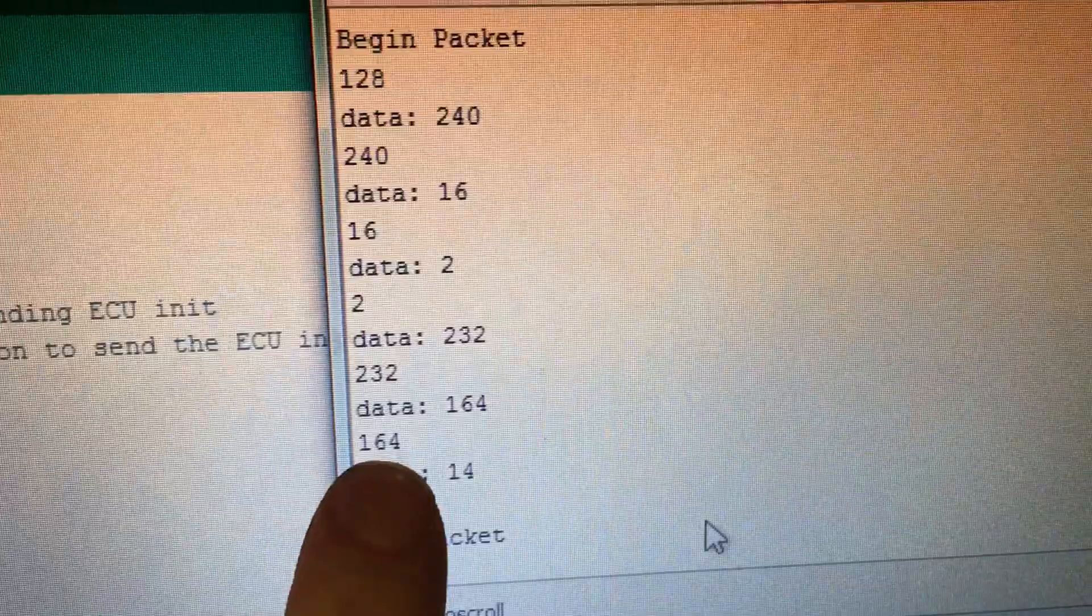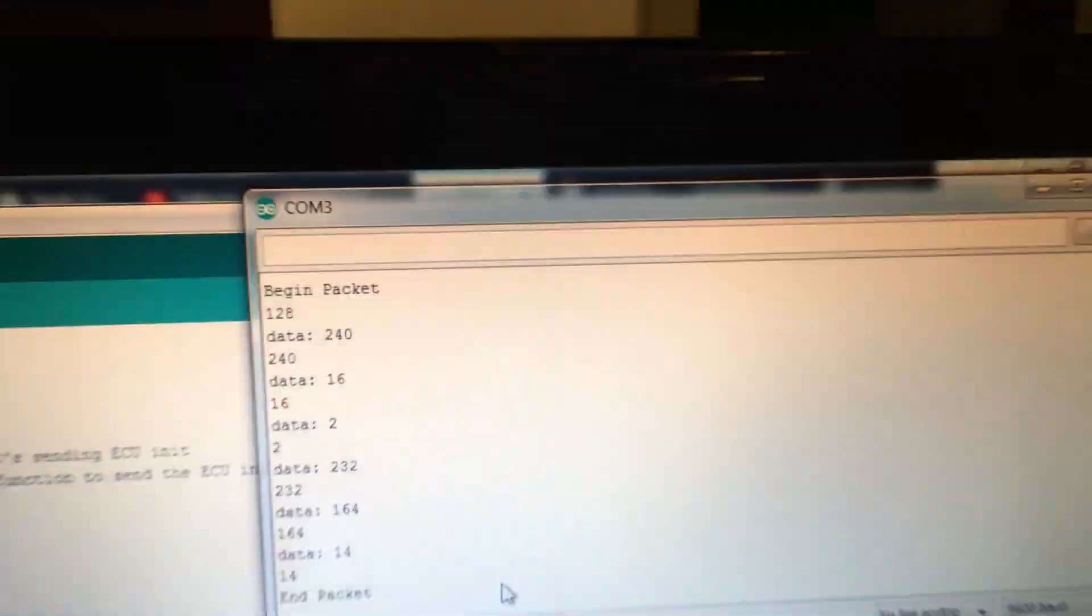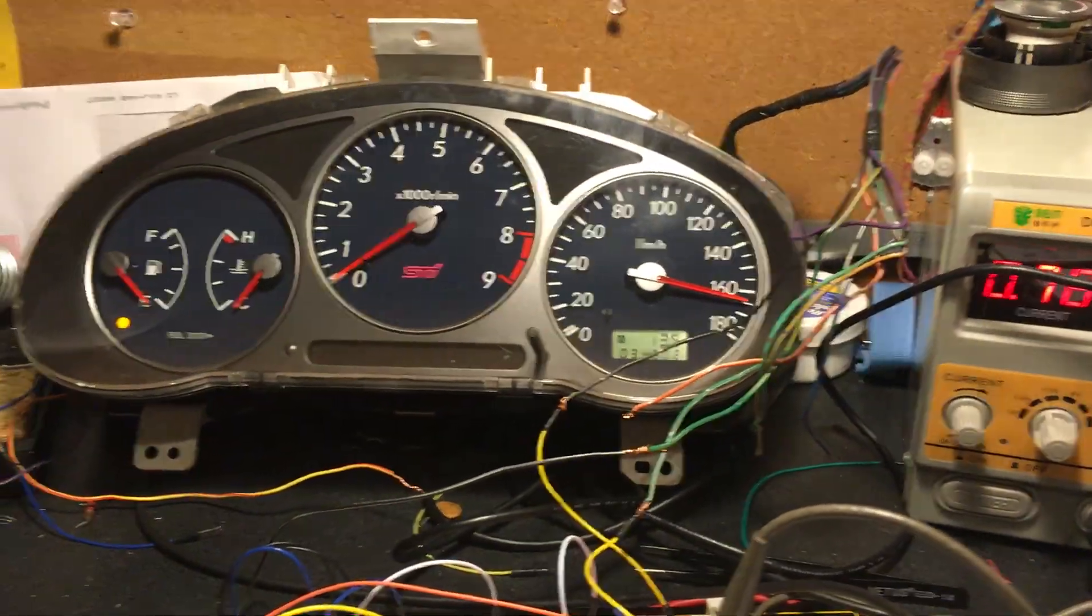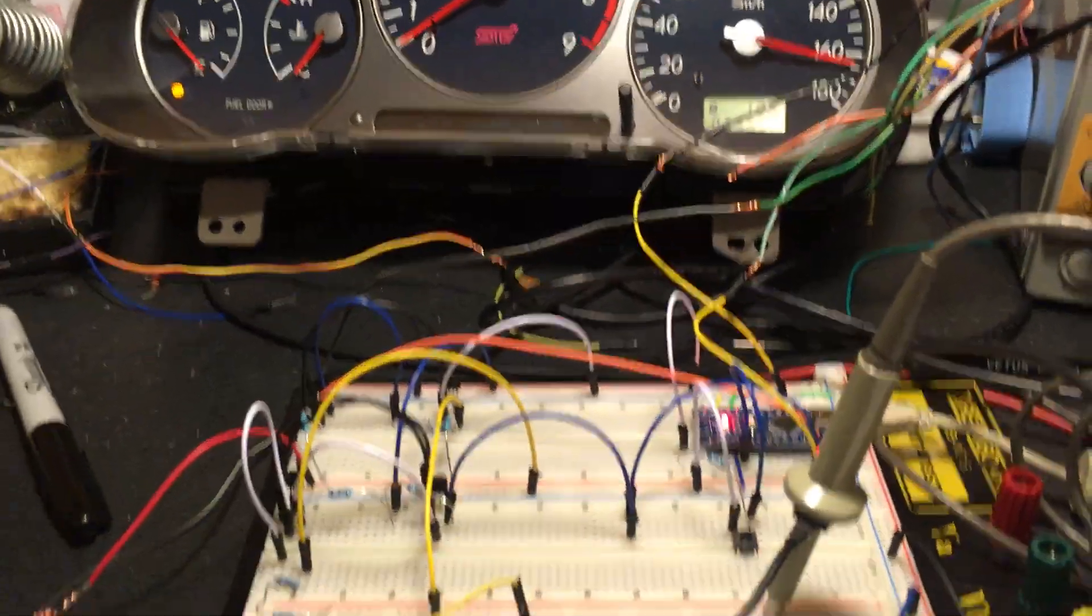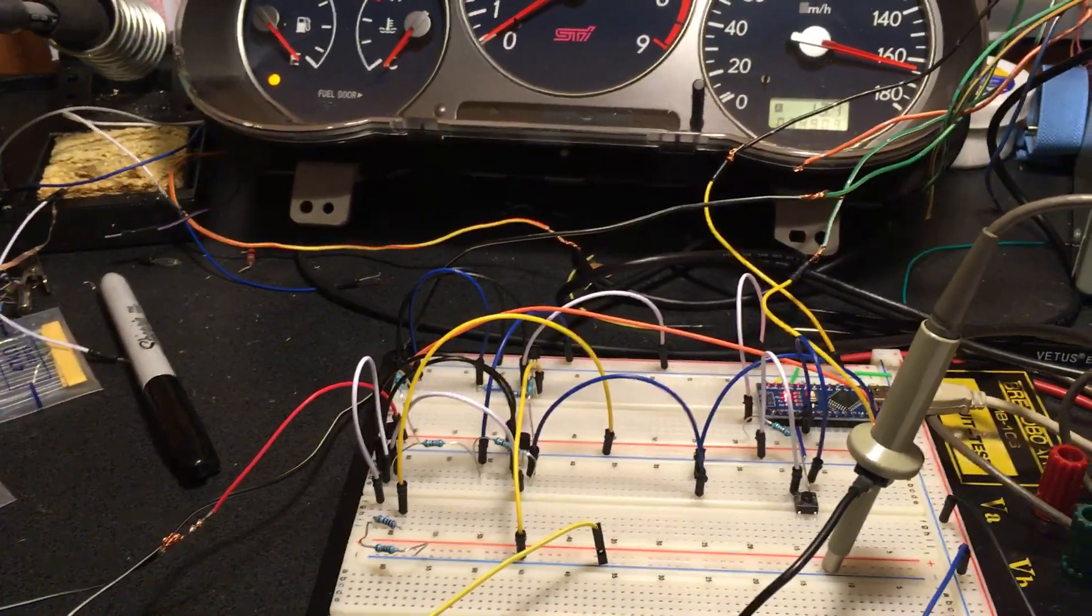164. That's our vehicle speed. So I just need to add in some more code to kind of parse this. And I'll have stuff up and running. And that's just the easiest parameter I went for. There's plenty more parameters where that came from to start looking at.